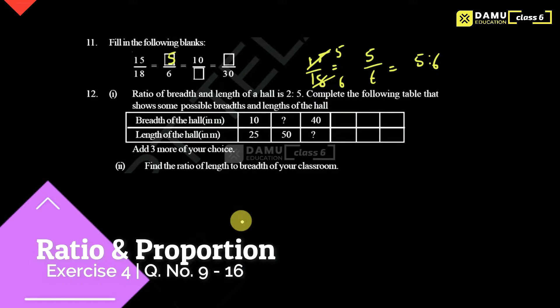Then what we have to multiply with 5 in order to get 10? So 5 into 2 is 10. Like that, here we are multiplying with 2. So for that, what we should multiply with 6 — 6 into 2 we have to do now. 6 into 2 gives 12. This is 10 by 12. So here we will get 12 — that is 10 by 12.